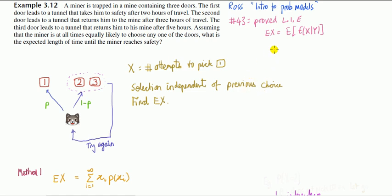In problem 43, I proved the law of iterated expectations, and now we're going to apply it. This problem here is taken from Ross's book. You can read it, but I'm not going to solve this one. I'm going to solve a modified problem.